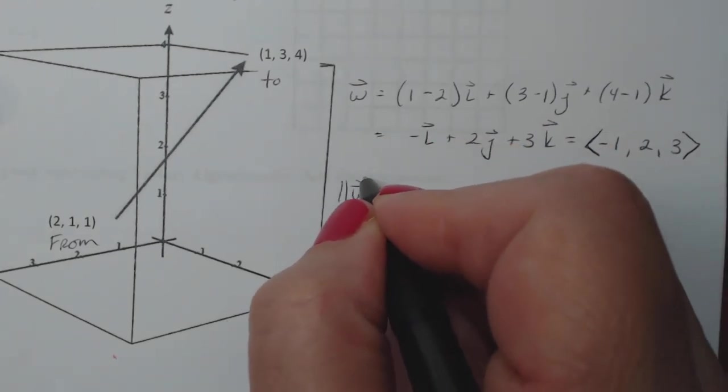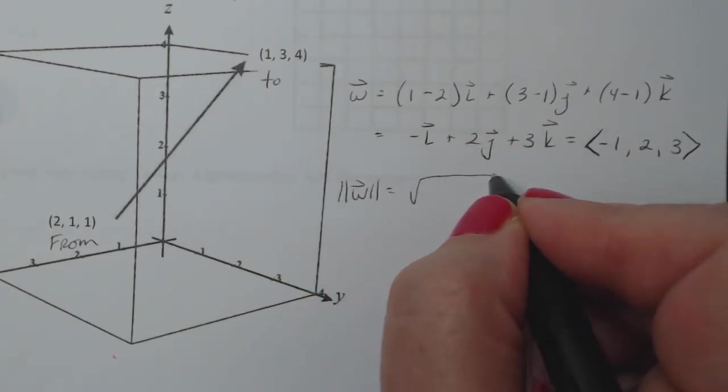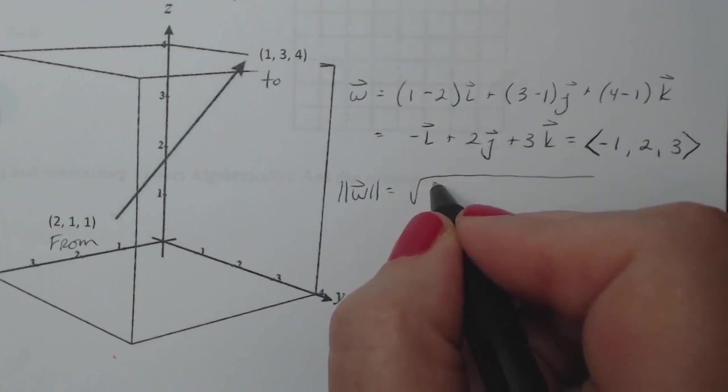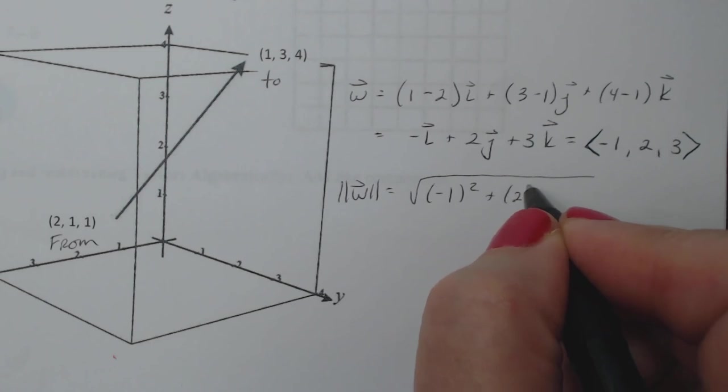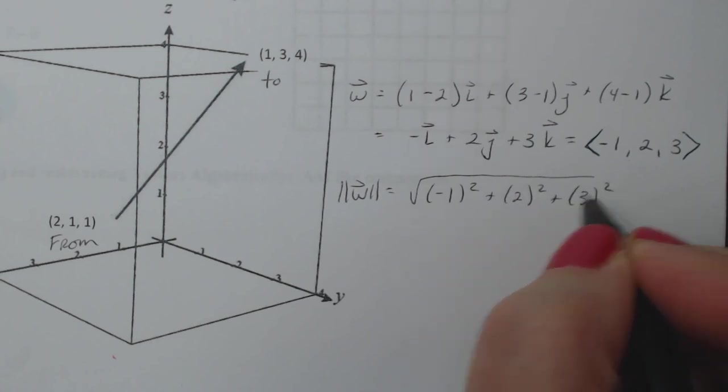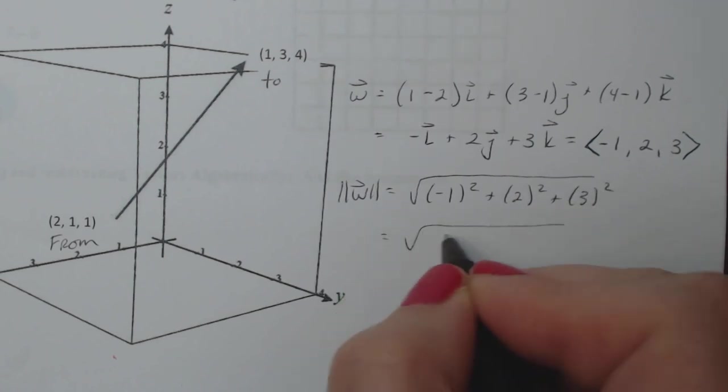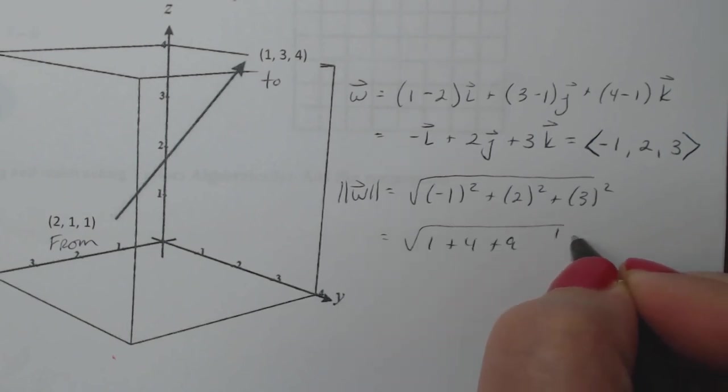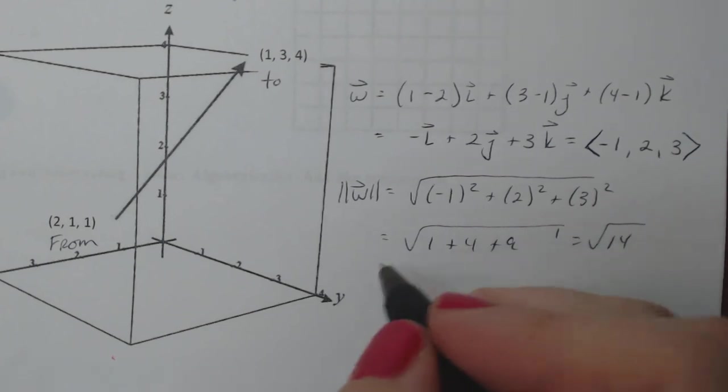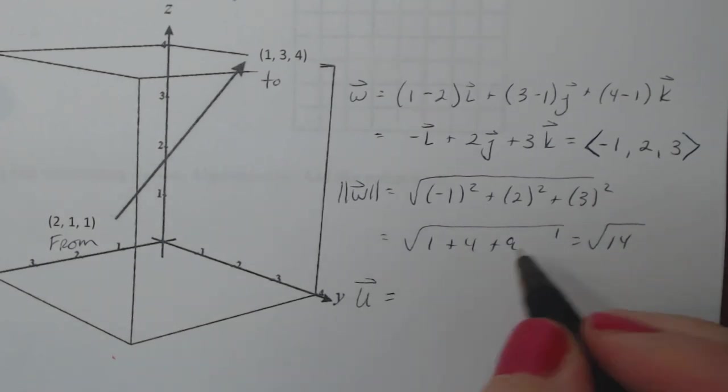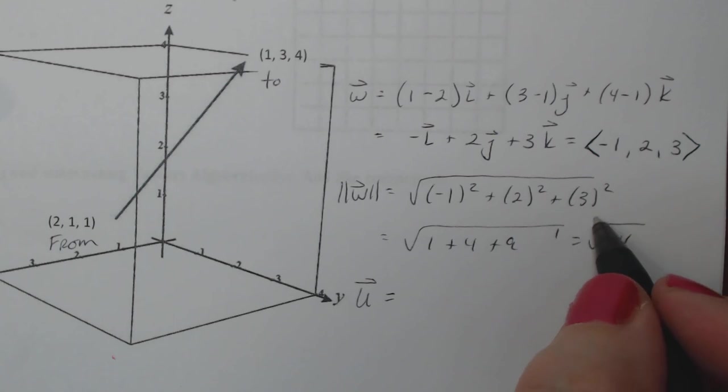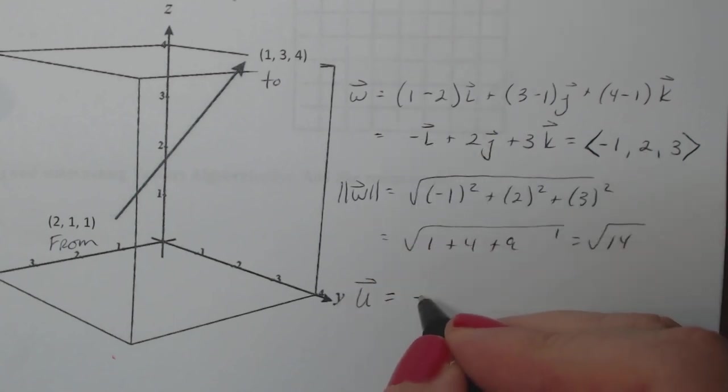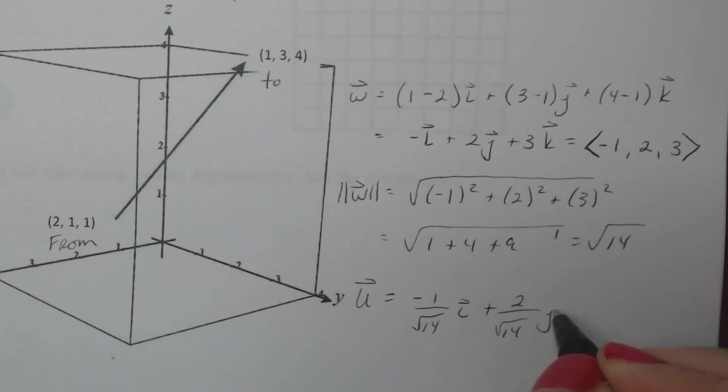If I want to do the magnitude of W now, that's going to be the square root of each of these numbers squared. So √((-1)² + (2)² + (3)²). That's going to be 1 + 4 + 9, which is √14. If I want to do the unit vector for W, I'm going to take its magnitude and divide each component by it. So -1/√14 i + 2/√14 j + 3/√14 k.